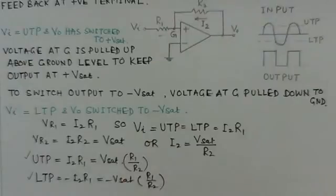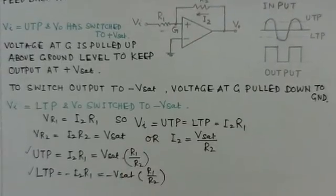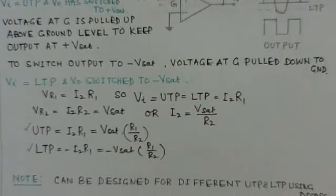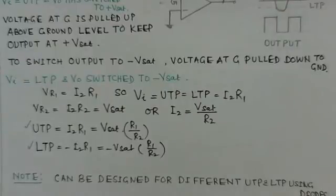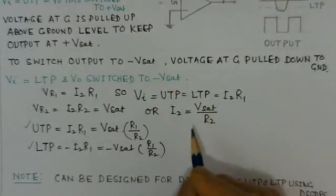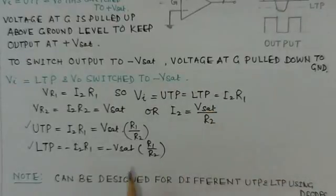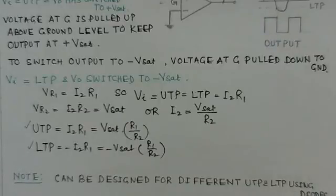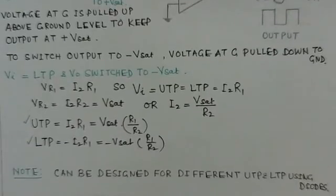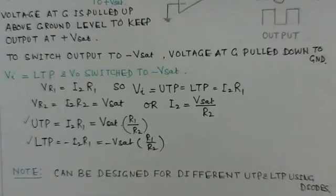From these equations, the UTP = V_sat × (R1/R2) and LTP = −V_sat × (R1/R2). These are the upper and lower trip points for the non-inverting Schmitt trigger circuit. This circuit can also be designed for different UTP and LTP values using diodes, as mentioned for the earlier circuit.